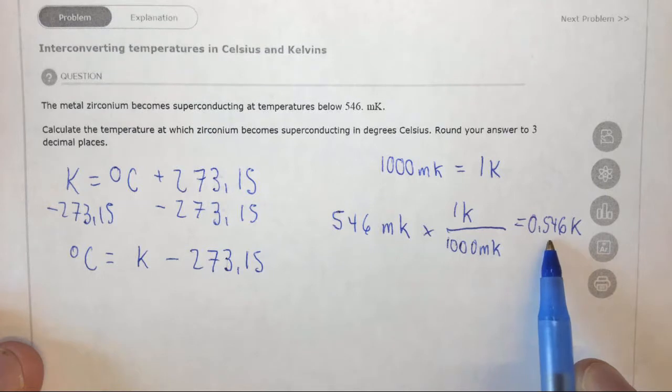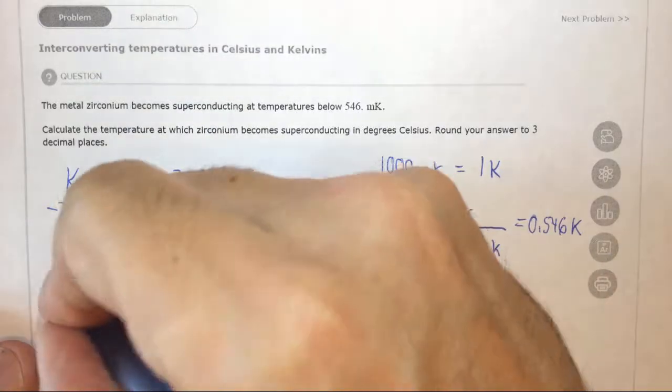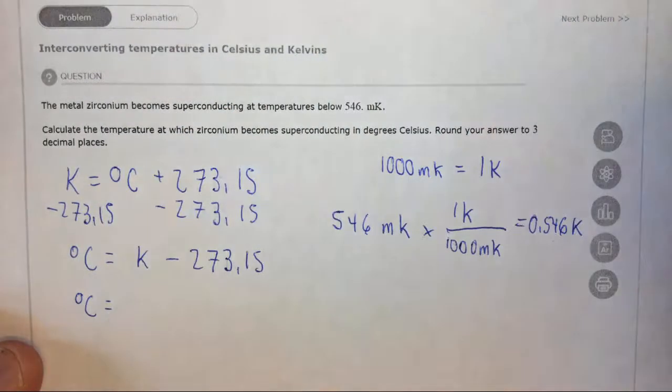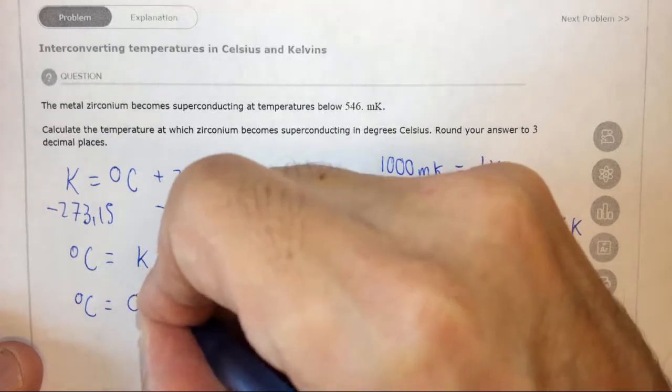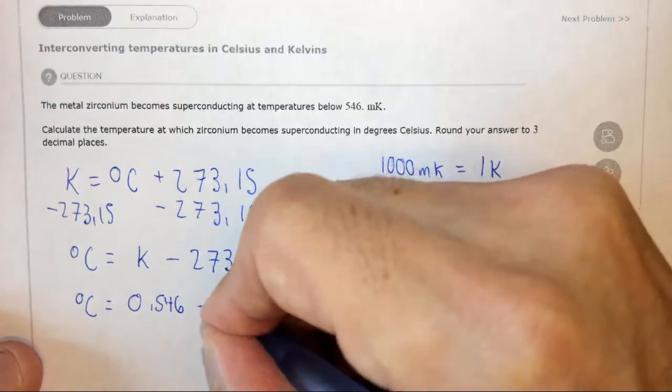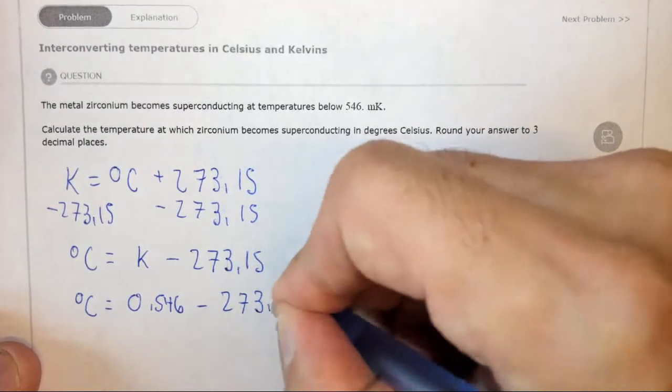Now we have Kelvin so we can plug into this equation. So degrees C equals 0.546 minus 273.15.